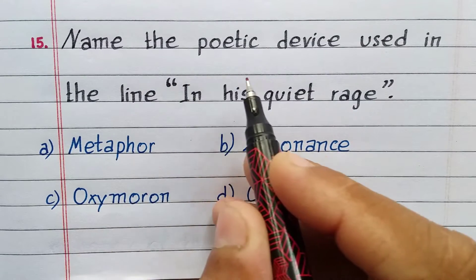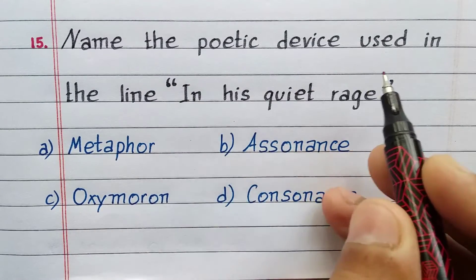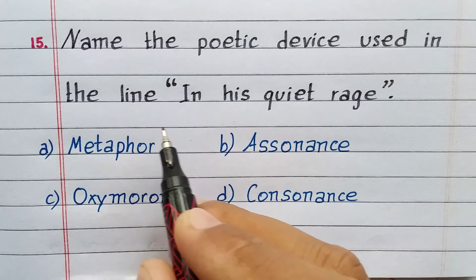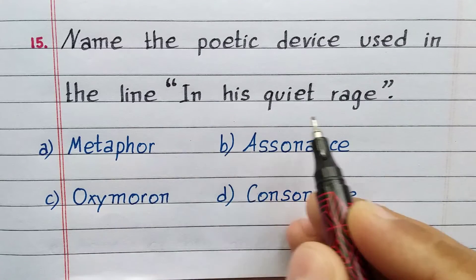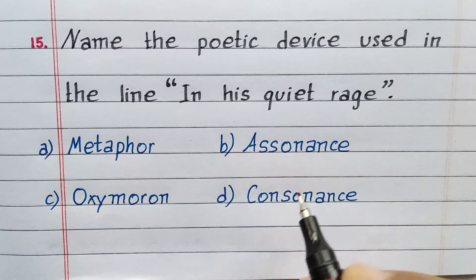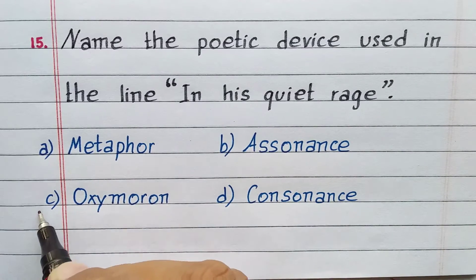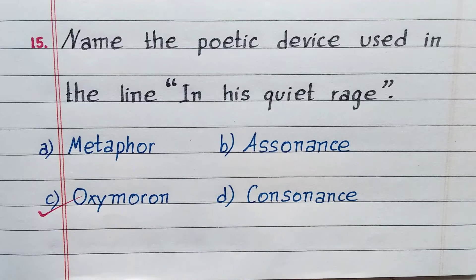Name the poetic device used in the line 'in his quiet rage.' Option C. Oxymoron.